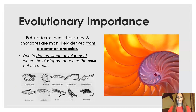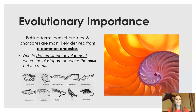First up, the evolutionary importance — why are we even talking about this? Echinoderms, hemichordates, and chordates are all most likely derived from a common ancestor. That's due to their deuterostome development, which — thinking back to our embryology unit — is where the blastopore forms into the anus first, then the mouth forms later.